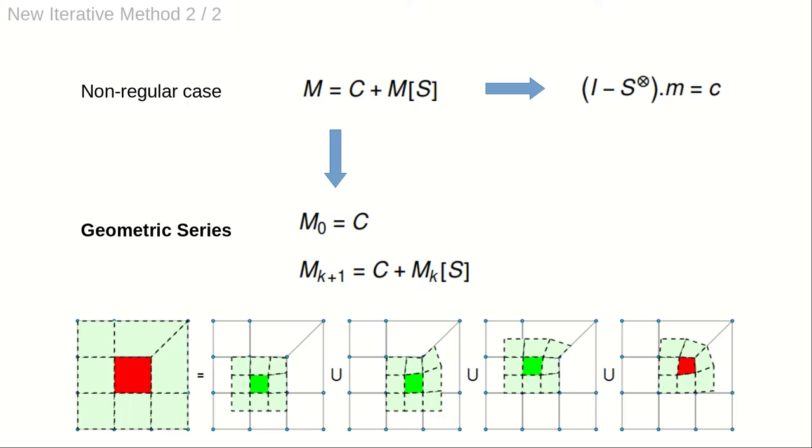In the non-regular case, the form is computed as a finite geometric series. The constant term C are the known contributions of the three regular patches.